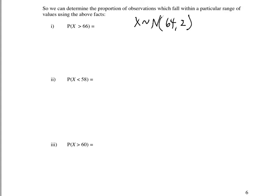What then would be the proportion of observations that are greater than 66? Or in other words, what percentage of observations are greater than 66? Also, what's the probability that an observation would be greater than 66 inches? So if I were to select a woman at random in Puerto Rico, 18 years or over, what's the chance that her height would be greater than 66 inches?